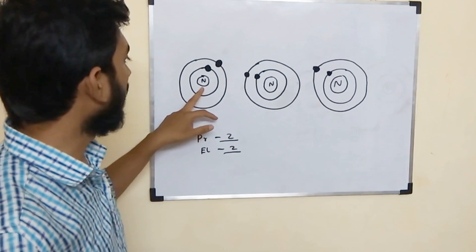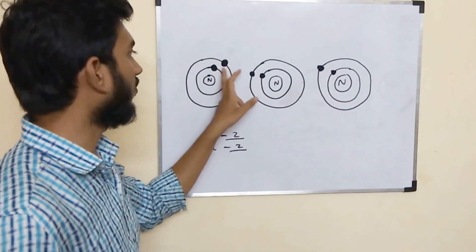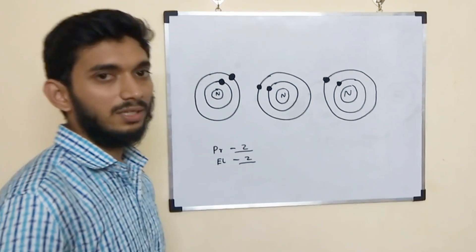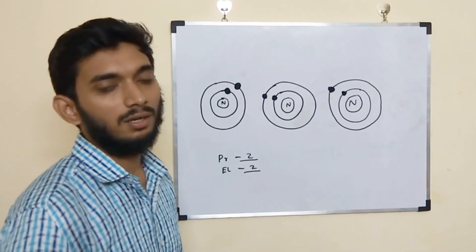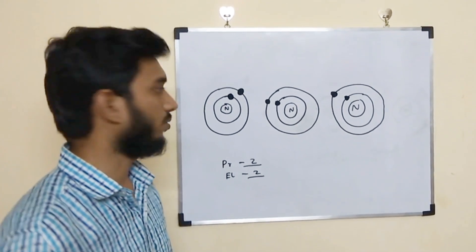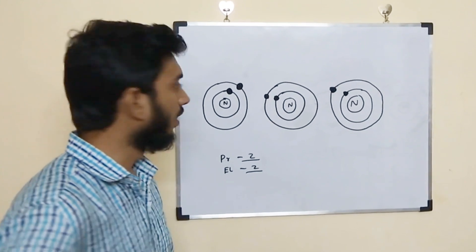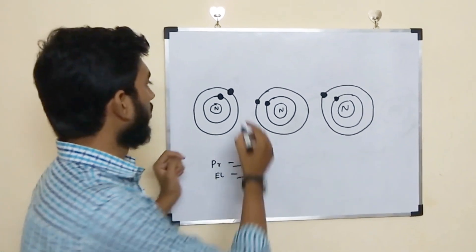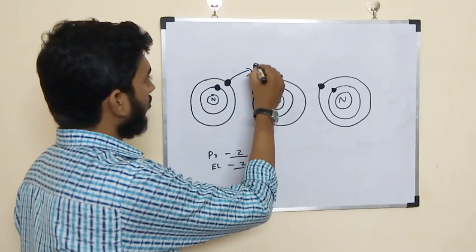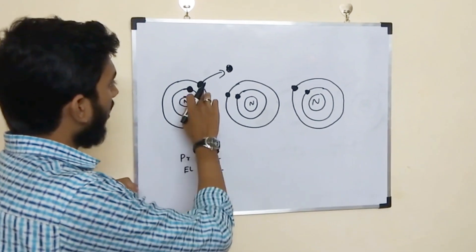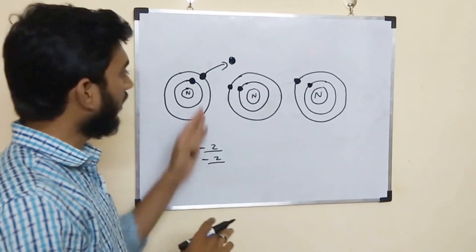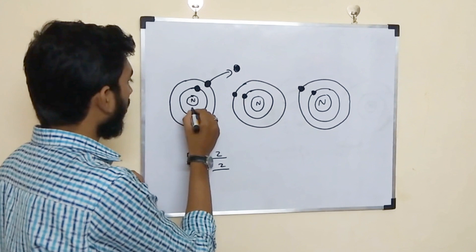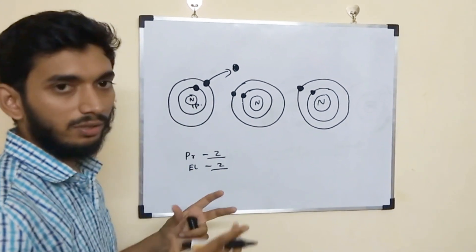At the center of the nucleus, the attractive force on the outermost electron is less. That is why we can move this outer electron from its position. When we move this electron, a vacancy is created. Since one electron has left, the atom now has more protons than electrons, making it positive.